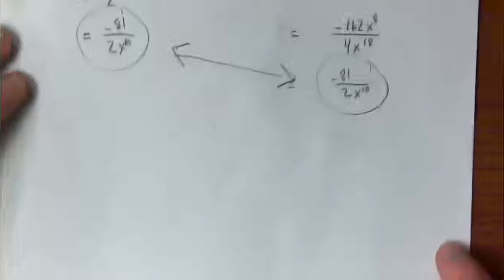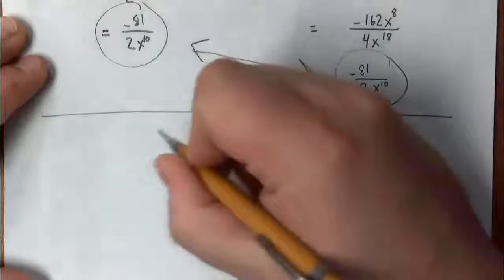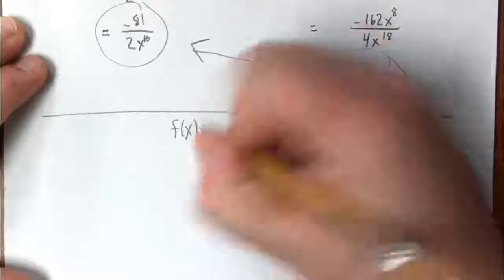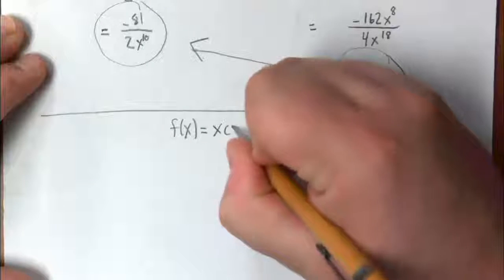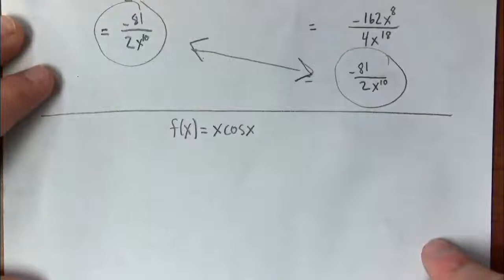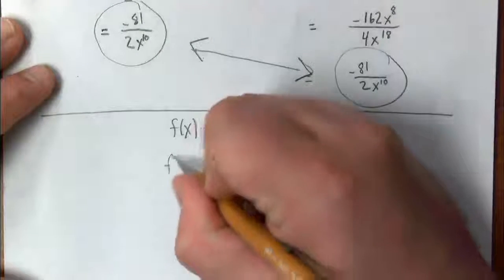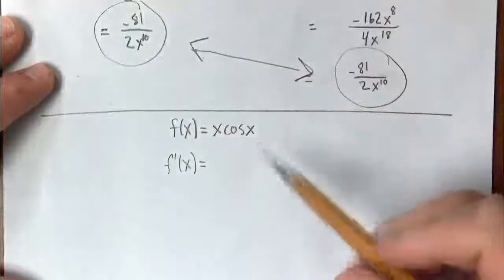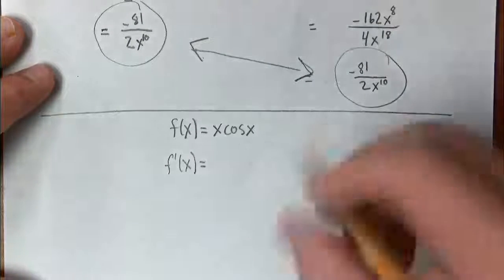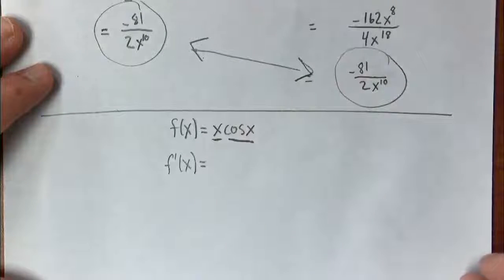The next question was about finding a second derivative. The function was f of x equals x times cosine of x, and we were tasked with finding the second derivative. To find the second derivative, we have to find the first derivative first. So let's differentiate this one time. We have a product of two functions — x and cosine x — so we need to use the product rule.